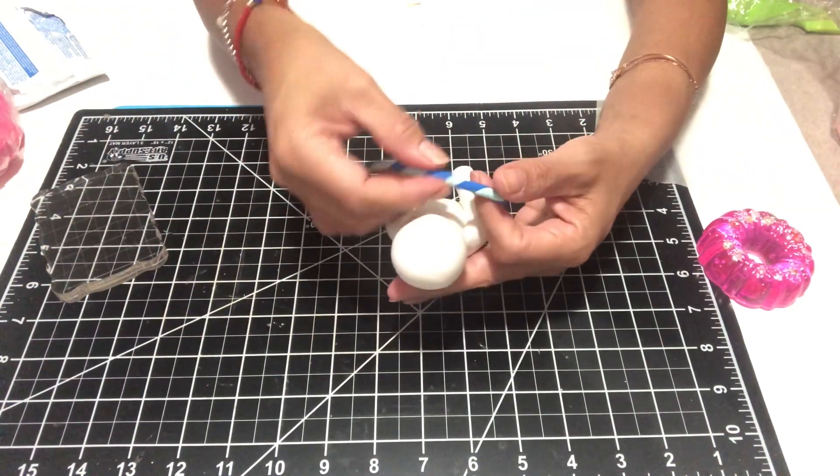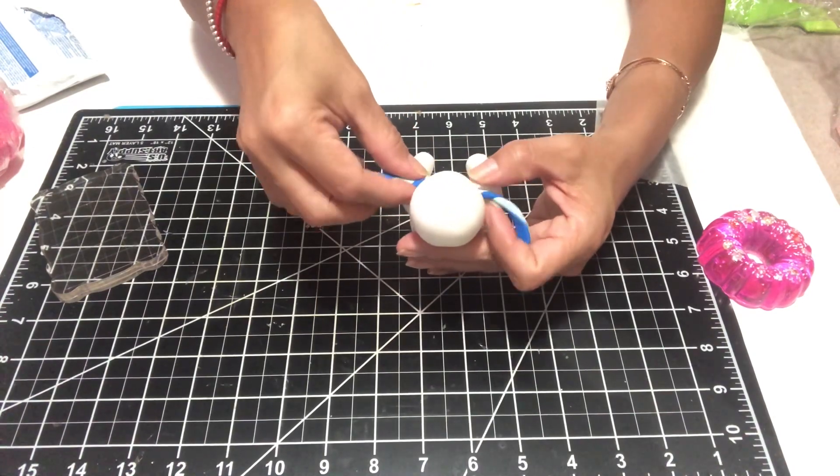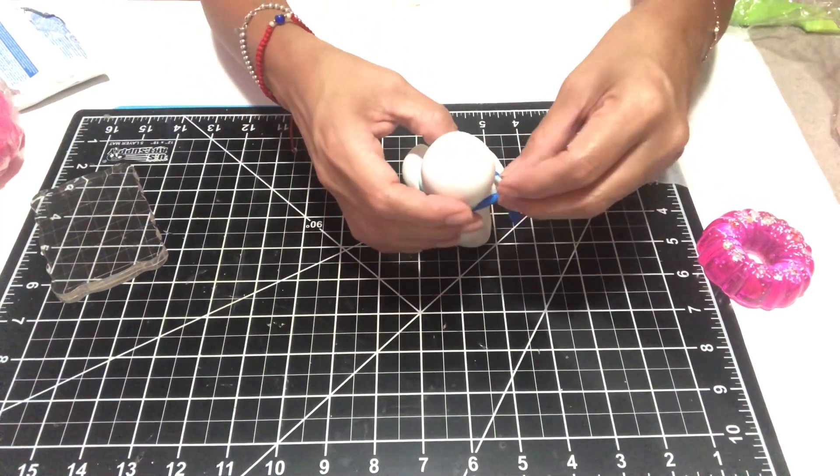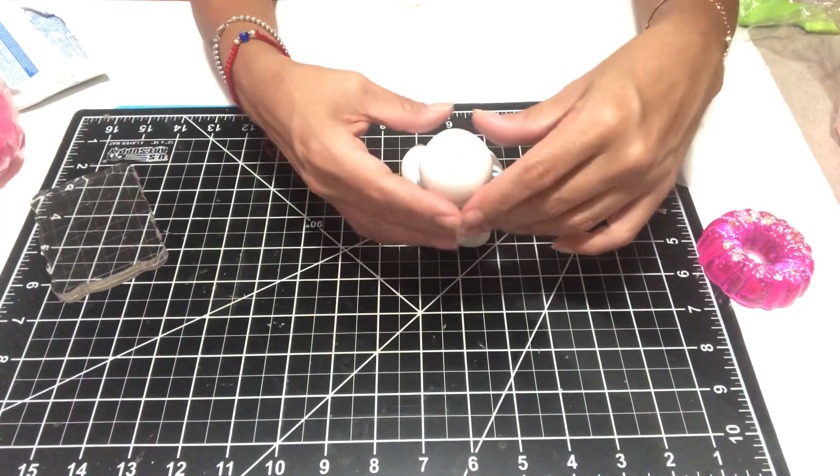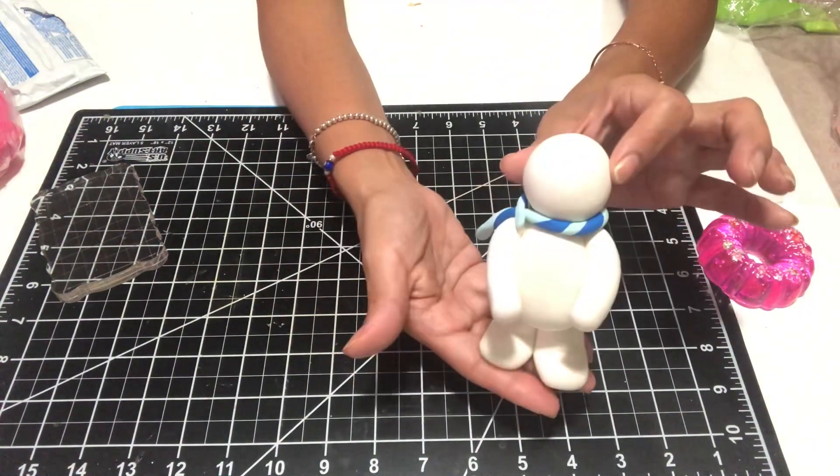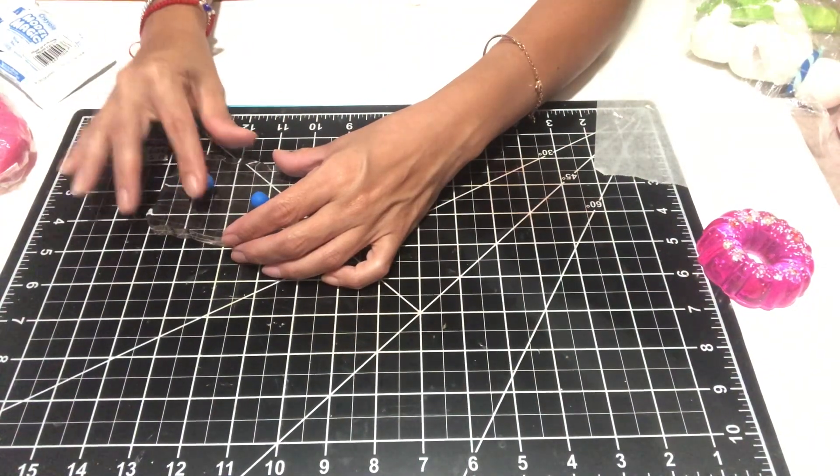Once I was done with his scarf, I just went ahead and did his earmuffs. That as well was easy. Once I get all of that done, I'll place him to the side again and let him sit while I make his little muffin.